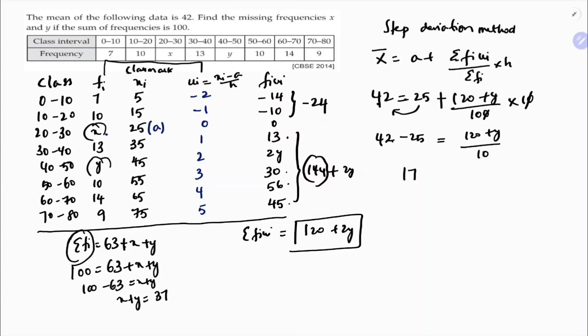42 minus 25 is 17. 17 into 10 is 170, equals 120 plus 2y. 170 minus 120 equals 2y, 50 equals 2y, so y is 50 by 2, the frequency y is 25.